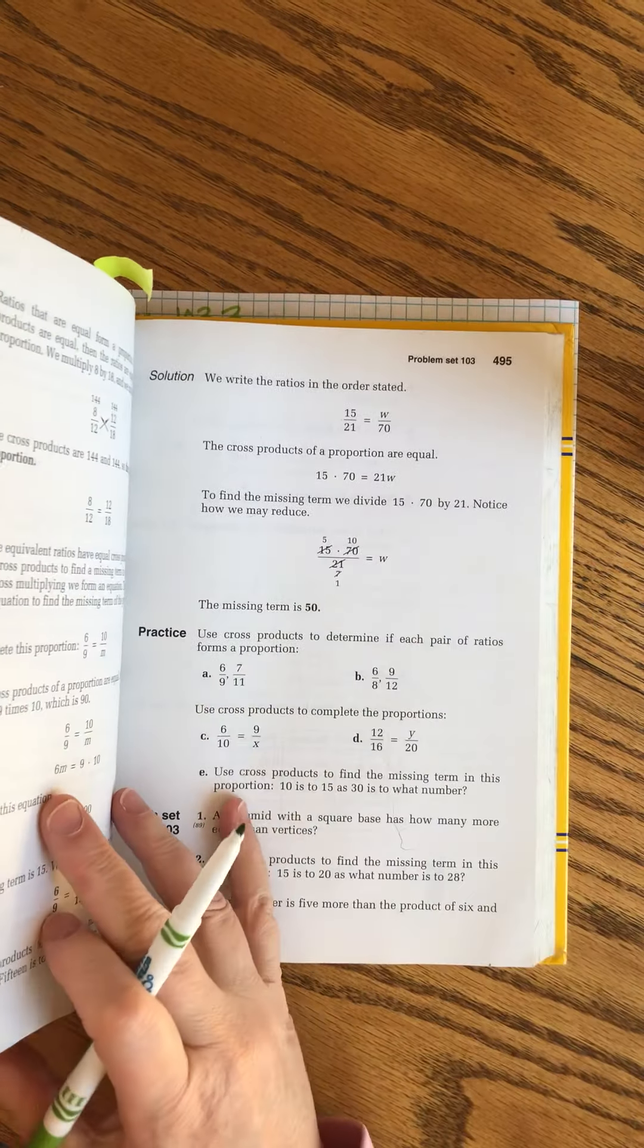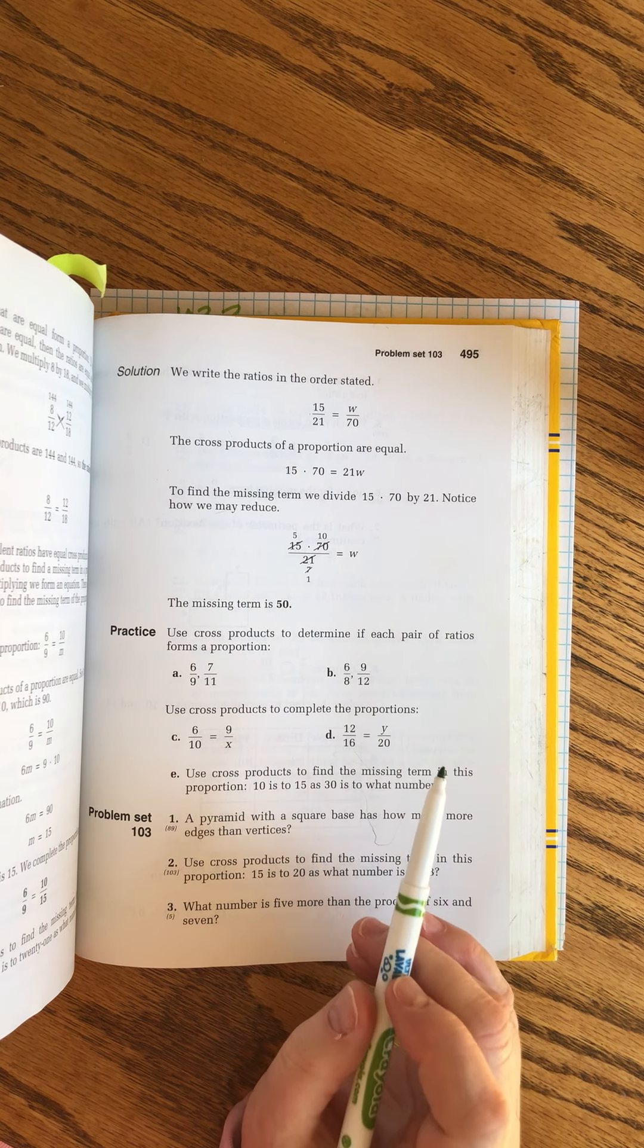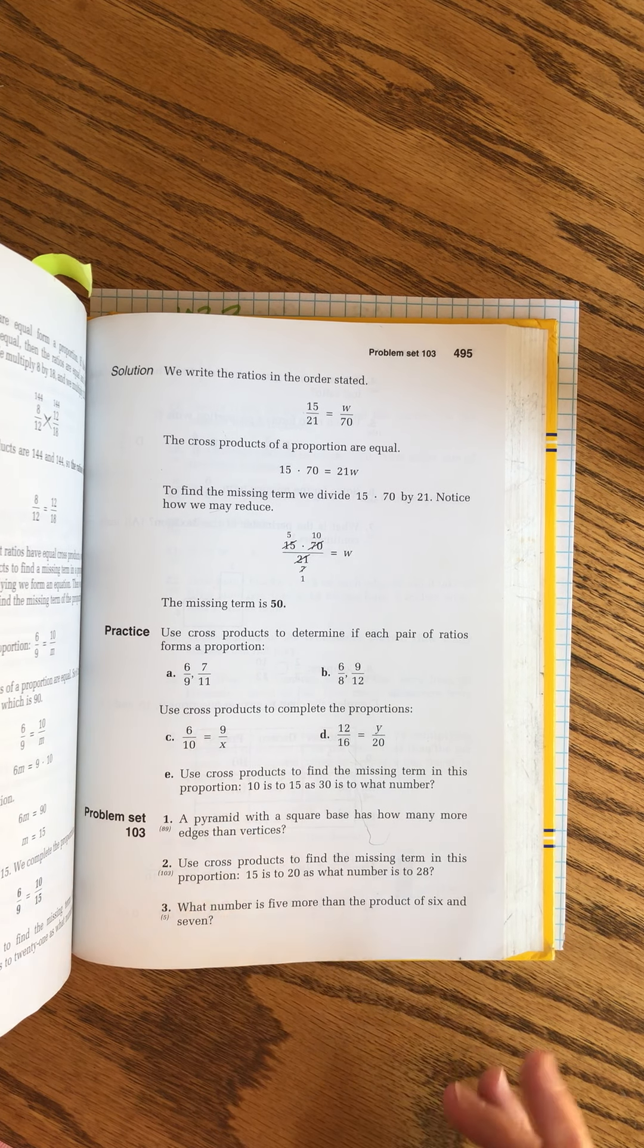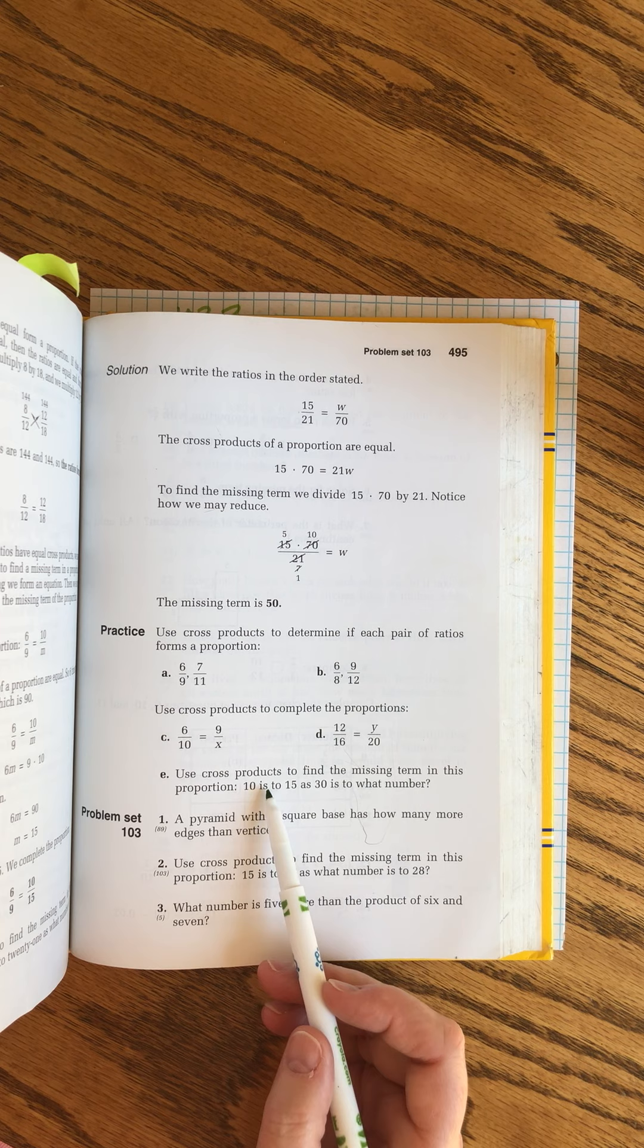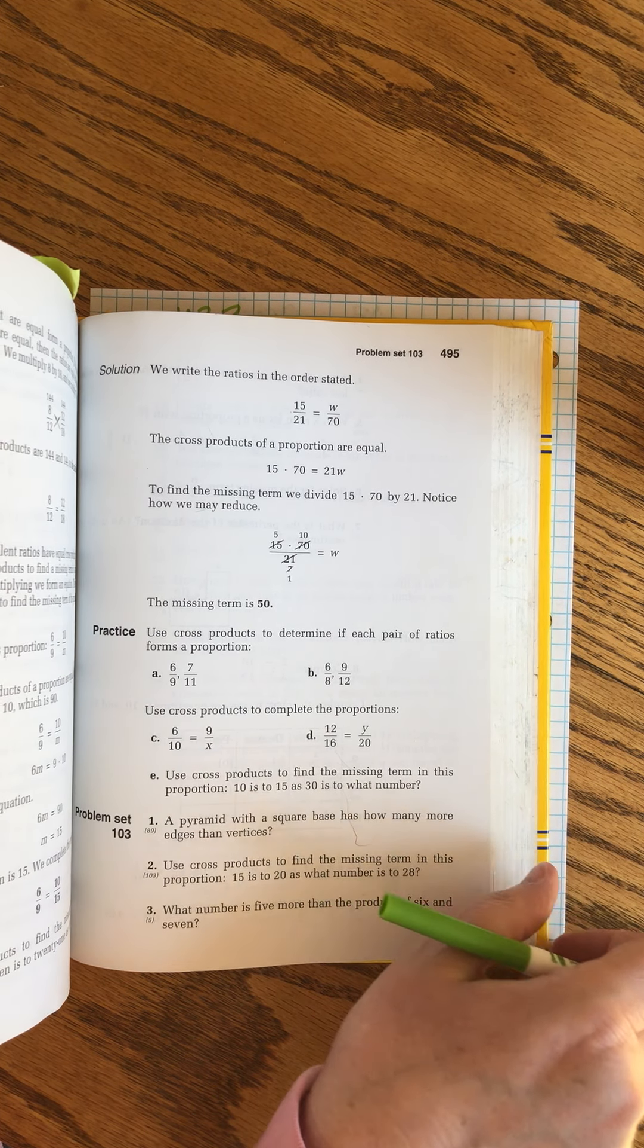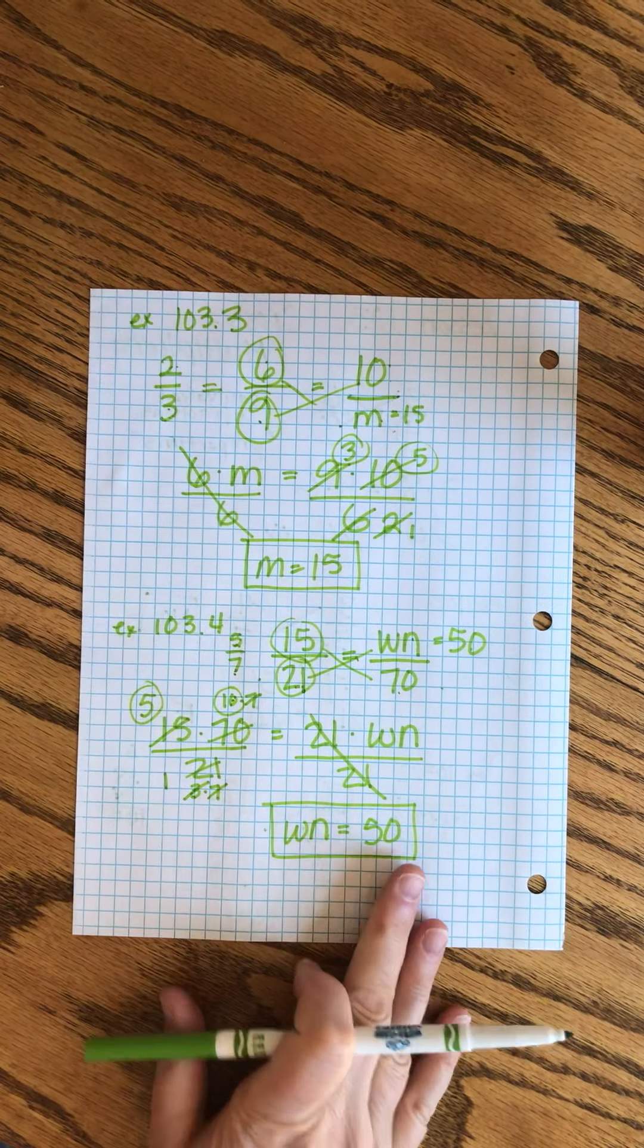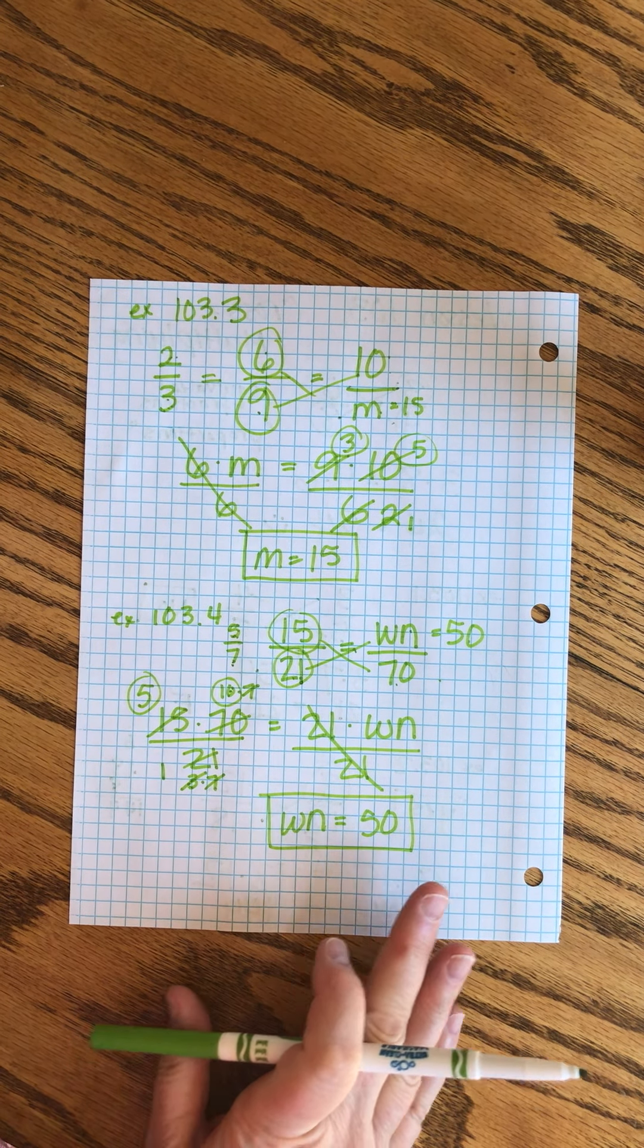Practice problems are exactly what we just did. In some of them, we're testing a pair of fractions to see if they form a proportion. And then in others, we're solving for a missing letter. And then the last one is like what we just did, where John gives you the proportion not in numbers but in words. Oh, isn't he tricky? But we're smarter than him. Well, I don't know if we're smarter than him, but we're just as smart. We don't fall into his little traps. Lesson 103 is now complete. See you next time.